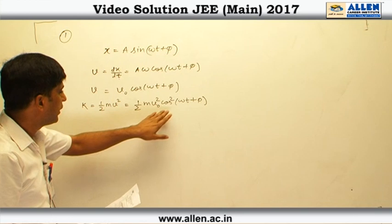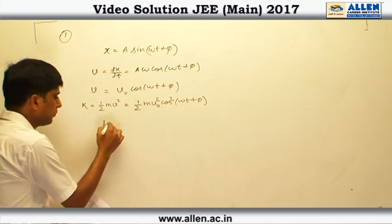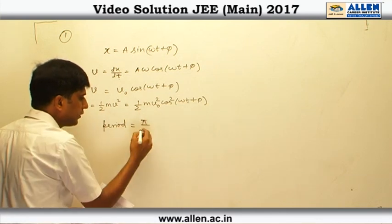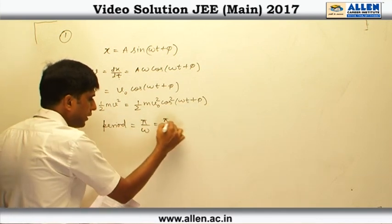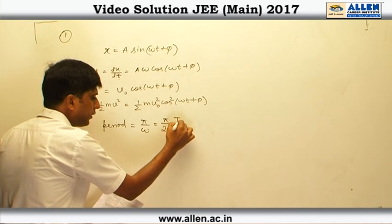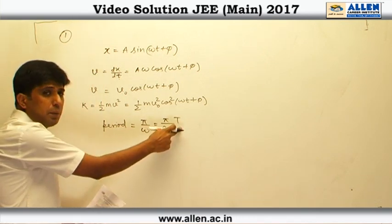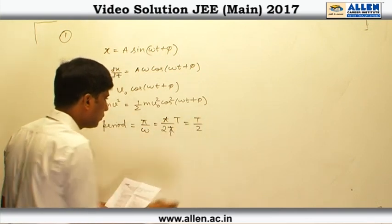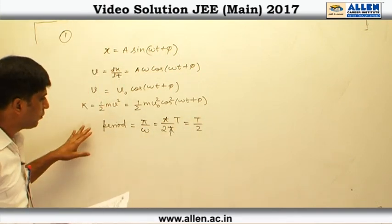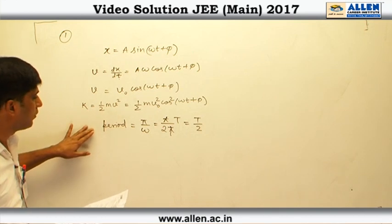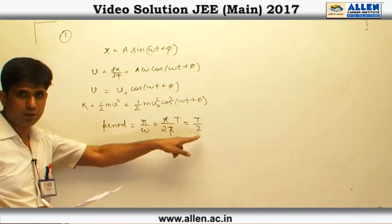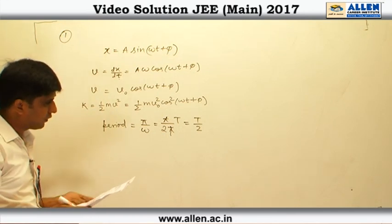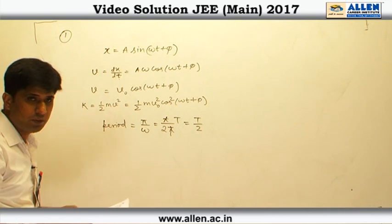Since period of the cos square function is pi by coefficient of t that is omega, and omega is equal to 2 pi by capital T where capital T is the time period of the particle performing SHM, therefore period of the function is T by 2. That means the correct graph will have a period T by 2. In the given 4 options, the only option which is having the period T by 2 is option number 2. Therefore, the correct option is option number 2.